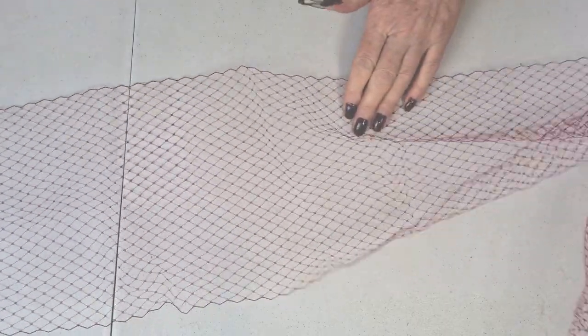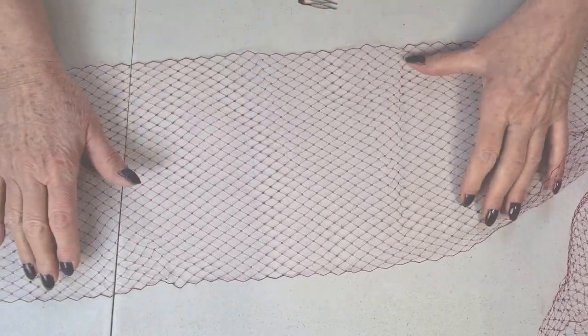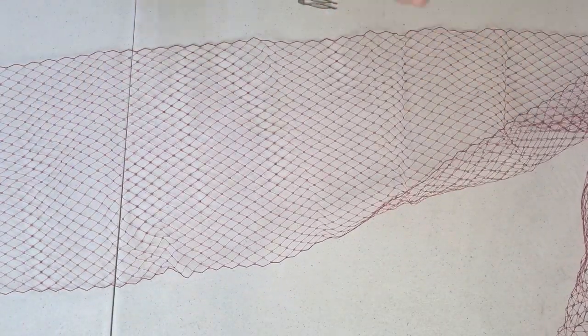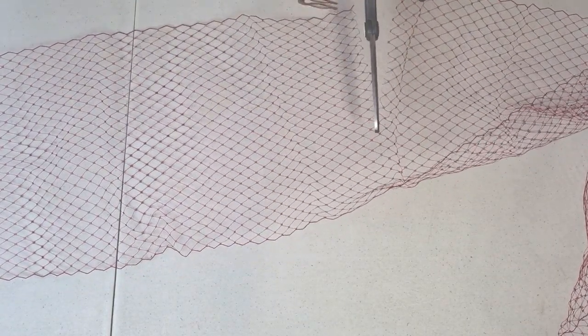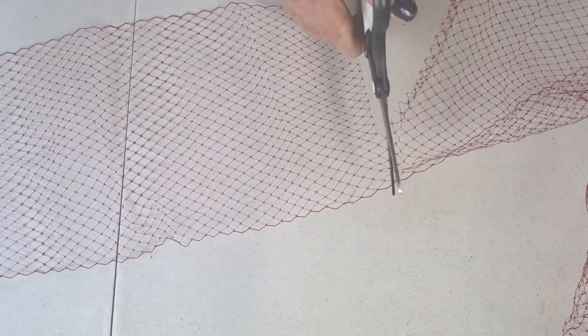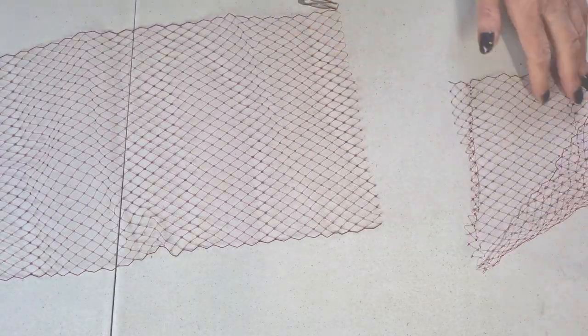Now it's quite crinkly this net so what I did was I ironed it on a very low heat with some steam and we will be steaming this into shape at the end.